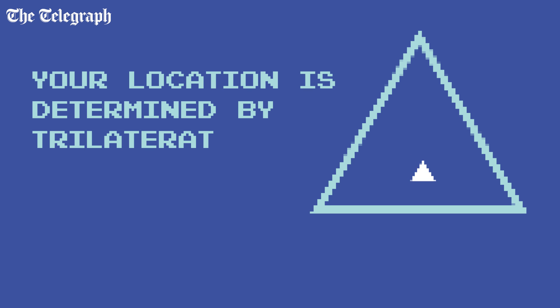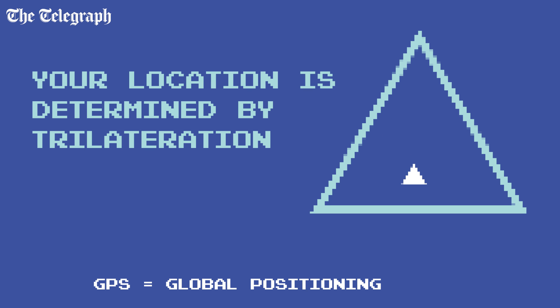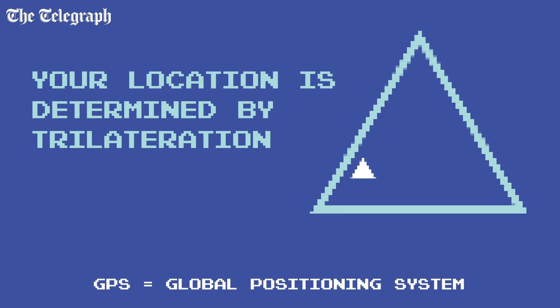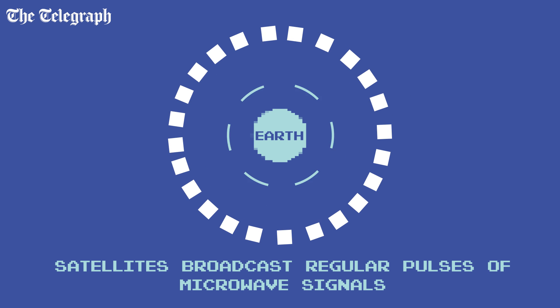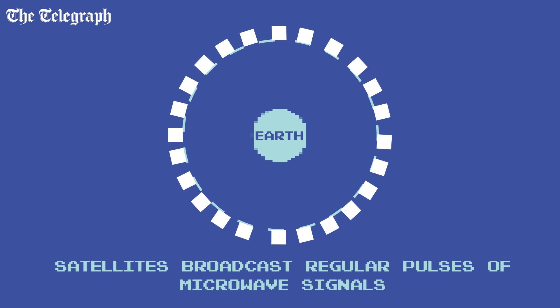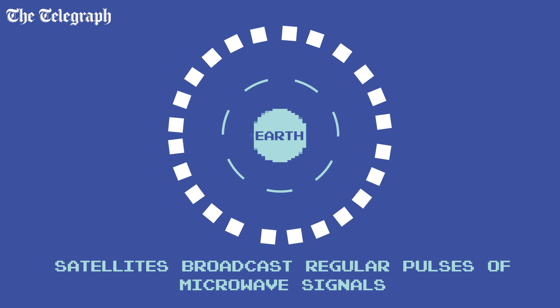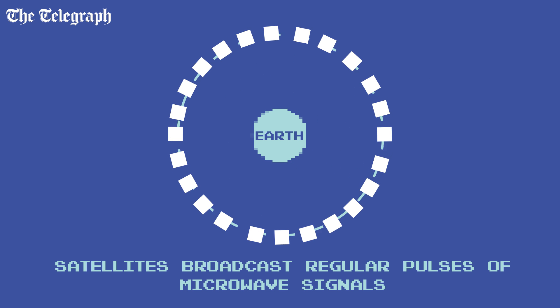The Global Positioning System, or GPS, uses a process called trilateration to determine your location. There are 24 to 32 GPS satellites in orbit around the Earth.